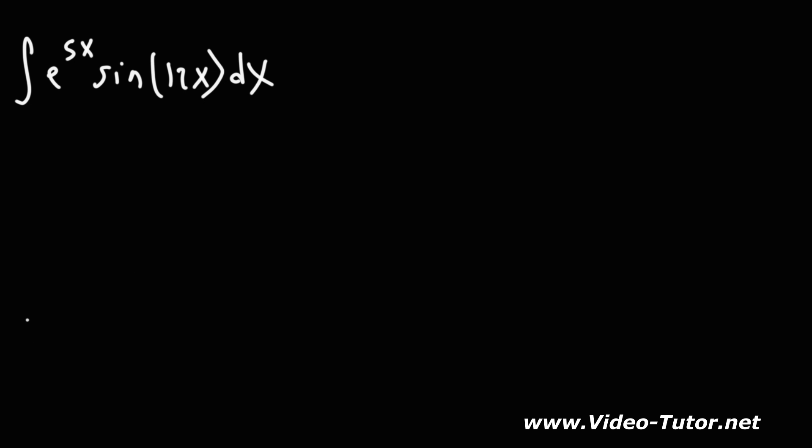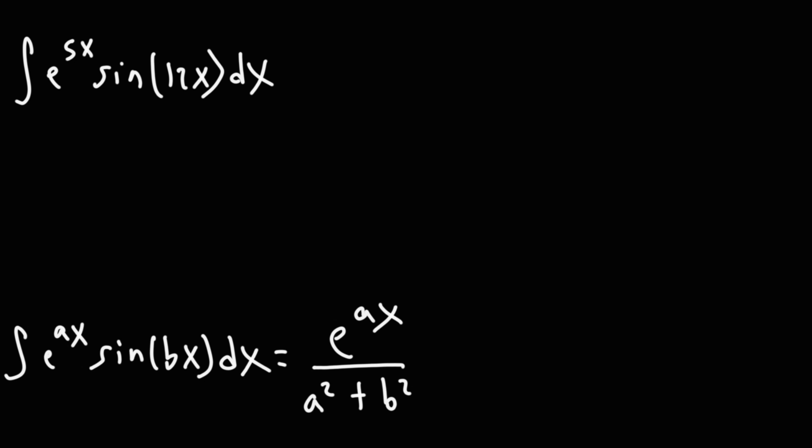Now, the formula that you need for this one is this. E raised to the ax times sine bx is equal to... The first part is the same: e to the ax over a squared plus b squared, and then times a sine bx minus b cosine bx, and then of course plus c.